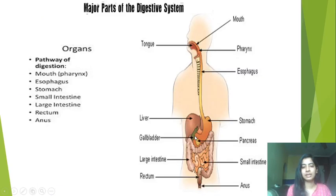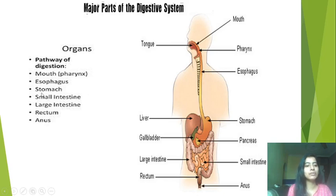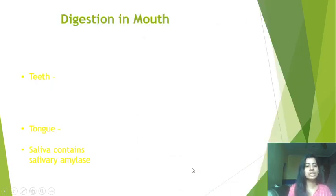The pathway of digestion: whenever we eat food, it goes from the mouth to the pharynx, to the esophagus, to the stomach, then to the small intestine, then to the large intestine, and finally undigested food is removed from the anus. So the pathway is: mouth → esophagus → stomach → small intestine → large intestine → rectum → anus. The part between the small and large intestine is called the rectum.